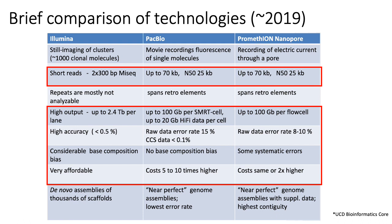In terms of bias, Illumina technologies are generally more biased compared to PacBio and nanopore. For example, Illumina error rates tend to be much higher for GC-rich sequences, whereas PacBio and nanopore have a more uniform error rate across different types of input sequences. Generally speaking, Illumina also tends to be cheaper on a per-base level compared to PacBio or nanopore.